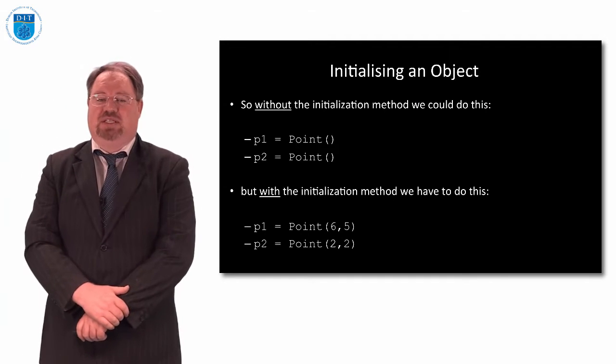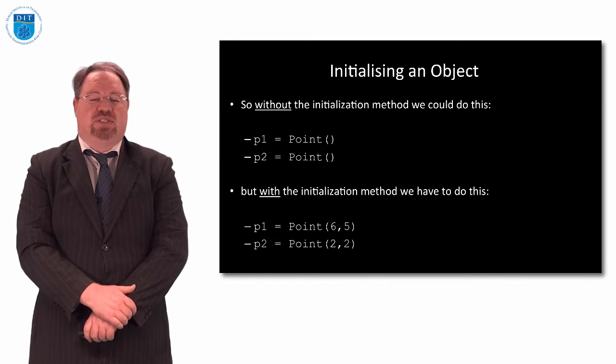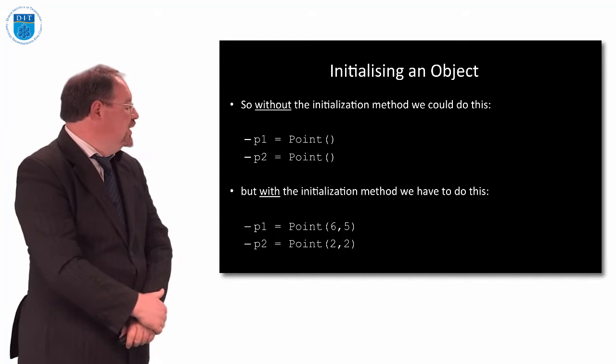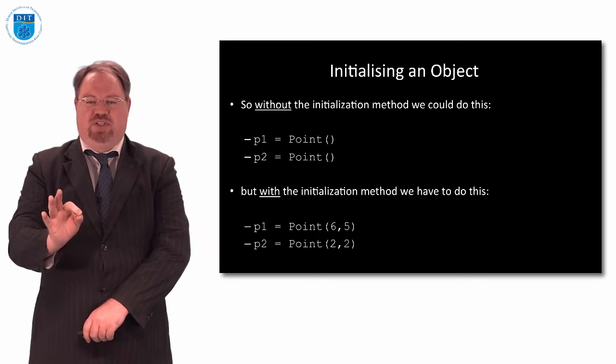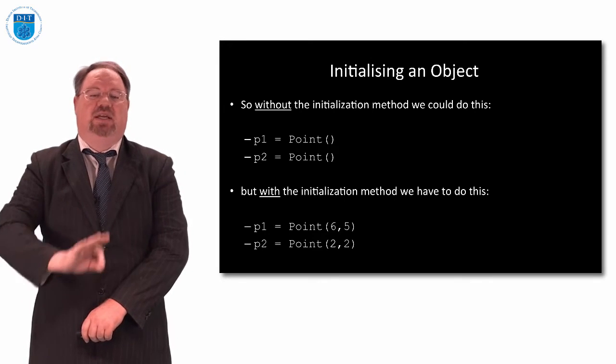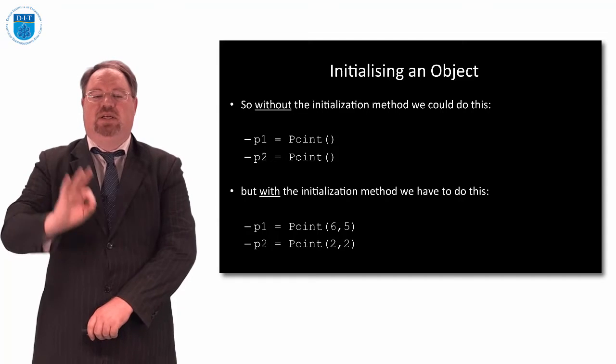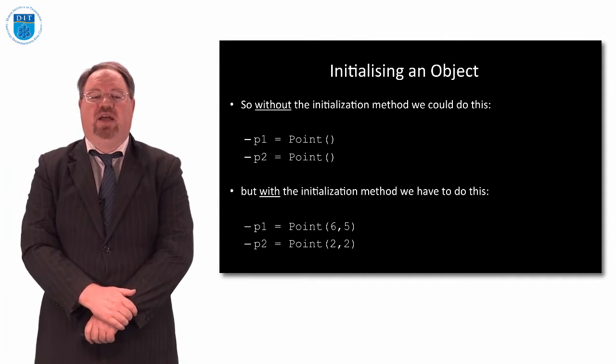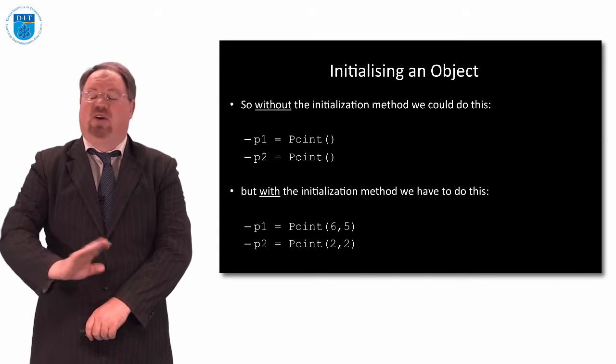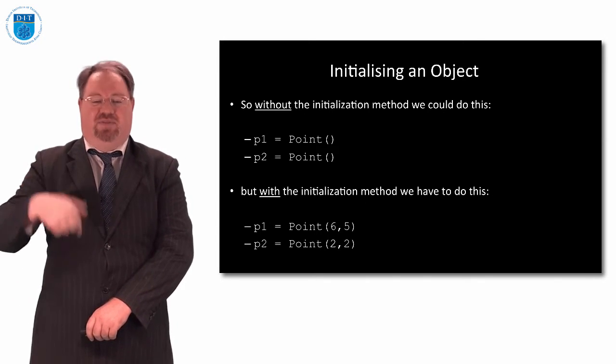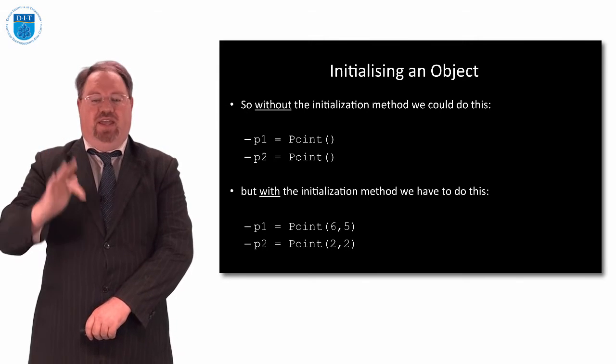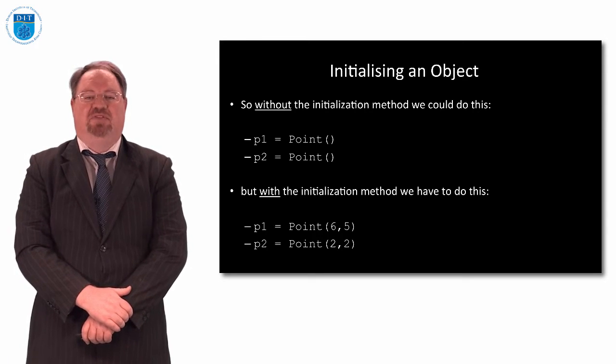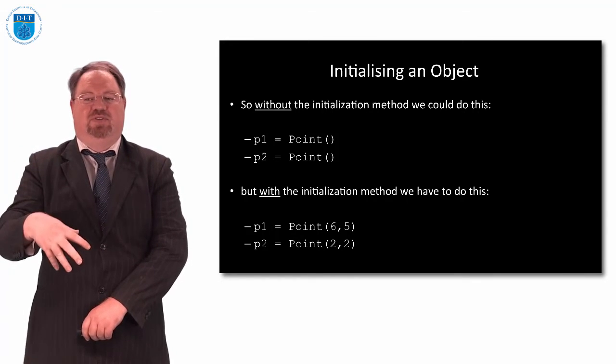So if we don't have an initialization method, we can just declare points or objects of type point by saying p1 gets point, p2 gets point. But when we do have an initialization method, it will force us to say, for p1 when we declare it, we have to give values to the x and y. So p2 has to get values 2, 2. Your program won't even compile if you have these declarations in the code, if you have an initialization method.